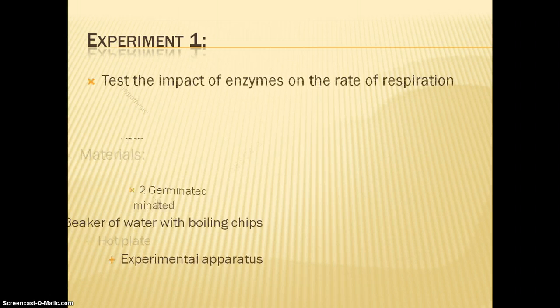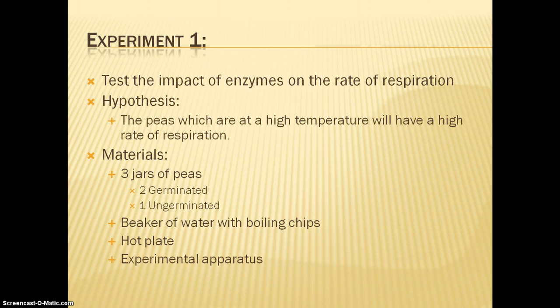Here we have experiment one. We're testing the impact of enzymes on the rate of respiration. Our hypothesis is that the peas which are at a high temperature will have a high rate of respiration. Our materials are three jars of peas, two of them being germinated and one ungerminated, and then a beaker of water with boiling chips, a hot plate, and an experimental apparatus.